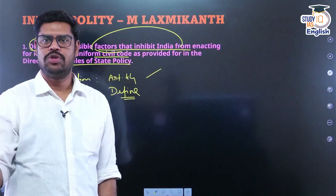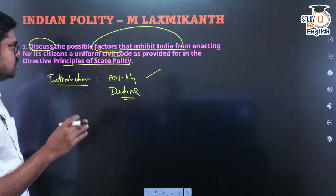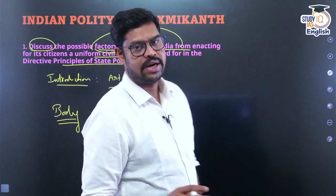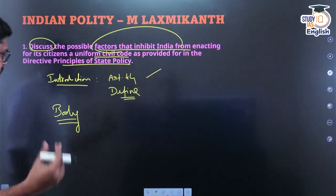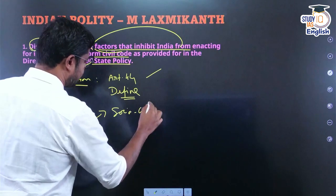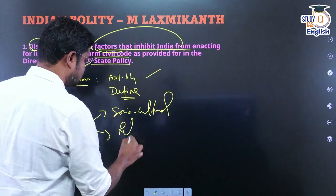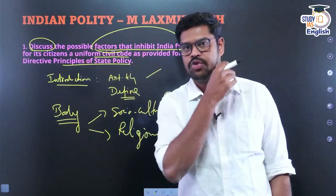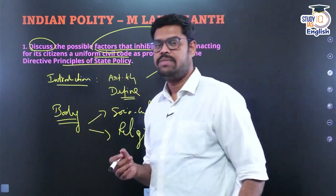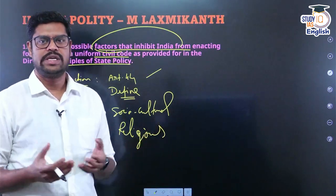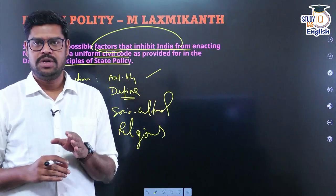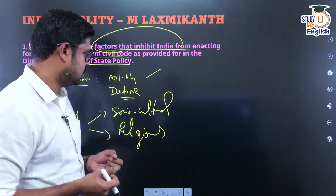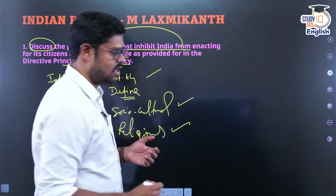In the body, briefly explain and then focus on the factors that inhibit the UCC. Give multiple dimensions: socio-cultural factors, religious factors — for example, the Constituent Assembly debate where members wanted UCC as a fundamental right but many felt it was incompatible with the right to freedom of religion — and practical factors. People believe in religious practices; you cannot practically implement all those things through coercion as it can create divides. And then political factors: is there political will to do that?